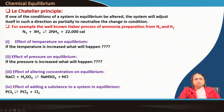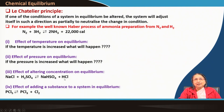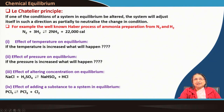Considering the effect of altering concentration on equilibrium: NaCl + H₂SO₄ ⇌ NaHSO₄ + HCl. In a closed vessel this reaches equilibrium, but in an open vessel HCl escapes, reducing product concentration and driving the reaction forward. Similarly, adding more NaCl increases reactant concentration, which the system counters by shifting forward to reduce that concentration.